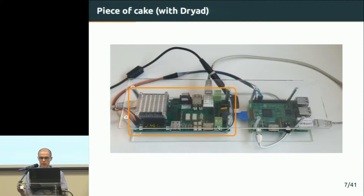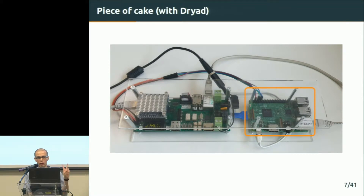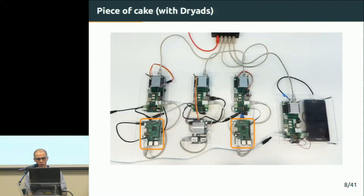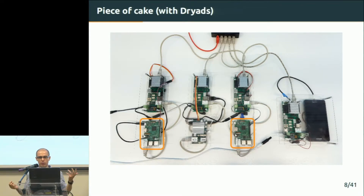A MuxSPICE board — the same as I've got right here — once connected to the target device it will control, like a Raspberry Pi 3 for example, requires only two connections to the outside world: the power supply and the Ethernet connection for all communication. This way, scaling up this solution is as easy as attaching another dryad — as we call them — a combination of a target device and controlling board. Scaling up is as easy as connecting another dryad first to power supply and then to a network switch. That's the only constraint limiting the number of devices we can test in a single testing laboratory.